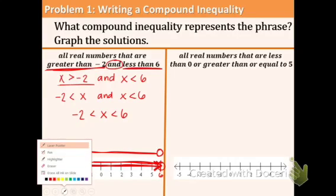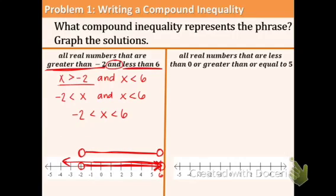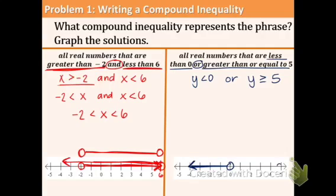Moving on to part B. All real numbers that are less than zero or greater than or equal to five. So we're using the OR word this time. Less than zero. Let's use Y. Y is less than zero or Y is greater than or equal to five. And with an OR inequality, they don't overlap. So we really don't have anything else to do besides graphing. So there's the Y is less than zero, and then the Y is greater than or equal to five. Close circle, shaded to the right.